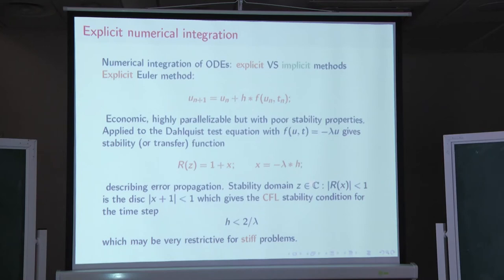That is in this domain. That is where the absolute value of this polynomial is not greater than one. So in the complex plane, this will be a unit disk, which is given by this equation. And this gives us the stability condition of three authors, Courant, Friedrichs, and Lewy, which says that time step cannot be larger than two over lambda.